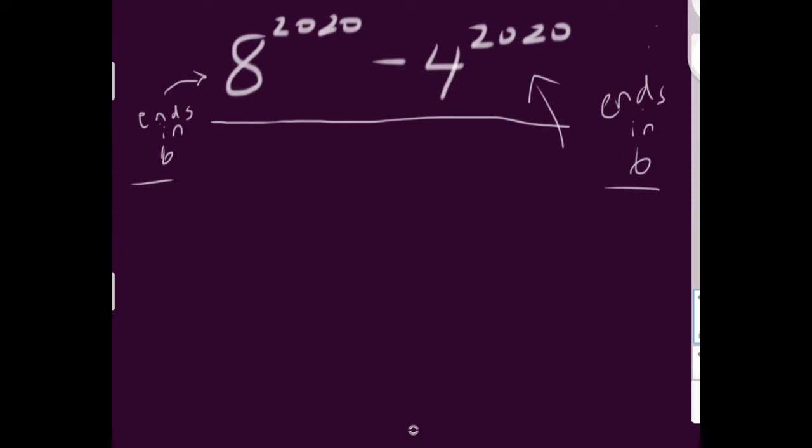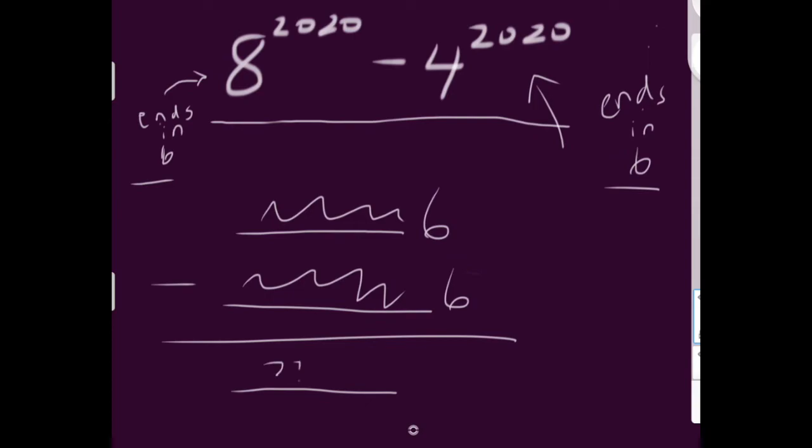So for some more explanation on that last step, you can think about it as this. There's some garbage here. That's the 8 to the 2020th. And this is 4 to the 2020th, which is some garbage followed by a 6. And when we subtract them, we're going to end up with something, something here. We don't really know what it is. But we do know that the final digit will be 0 because the 6 and the 6 cancel out. And because the 6 and 6 cancel out, the final digit of the overall equation, 8 to the 2020th minus 4 to the 2020th, has to end in 0.